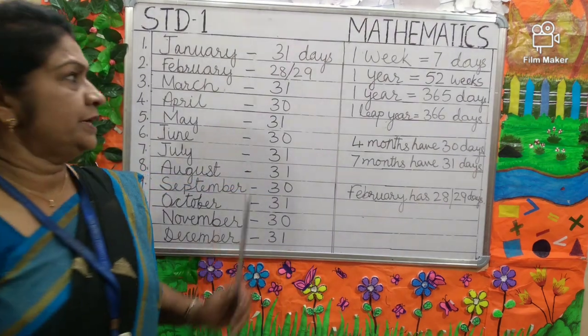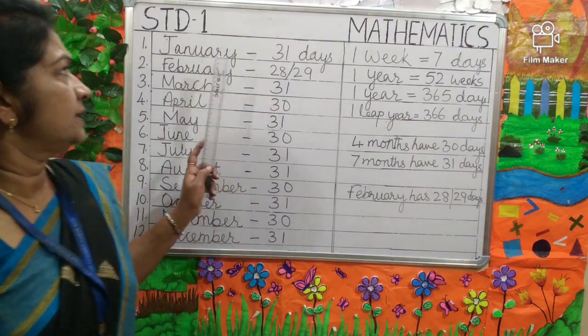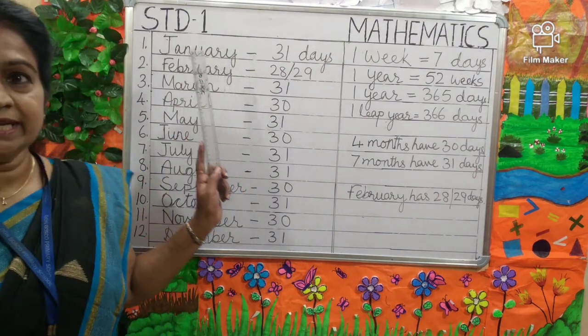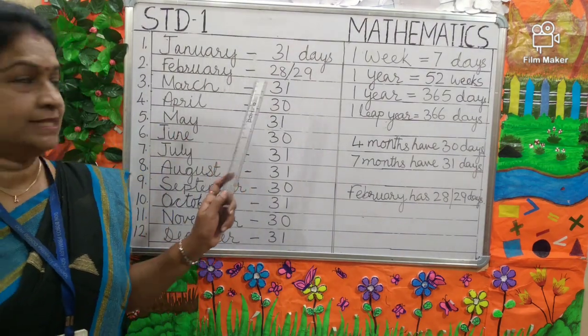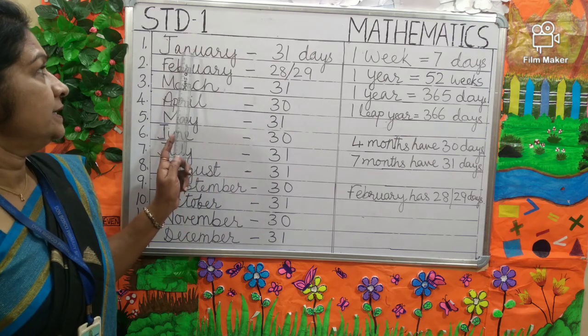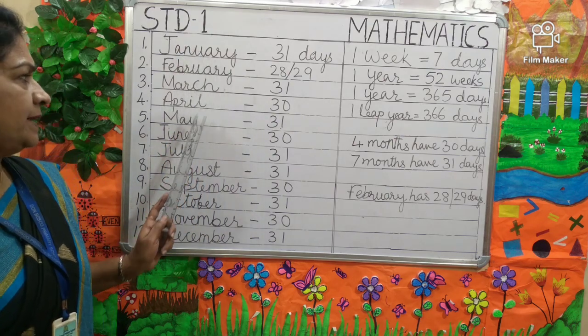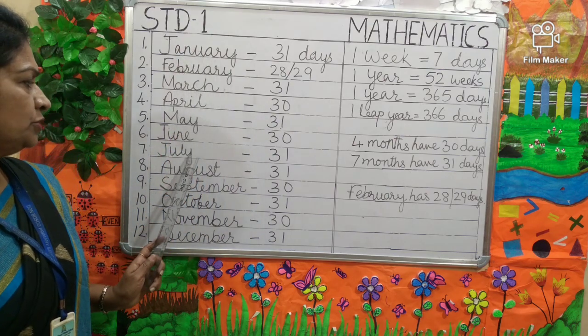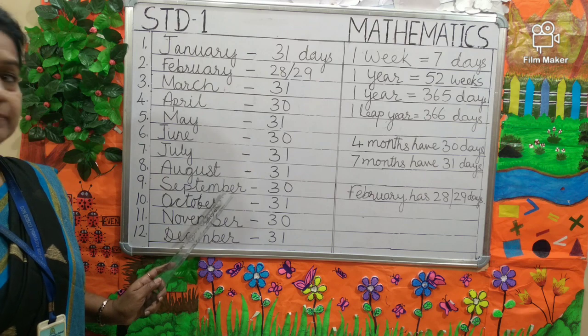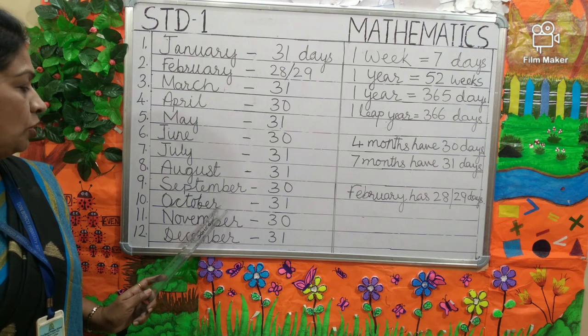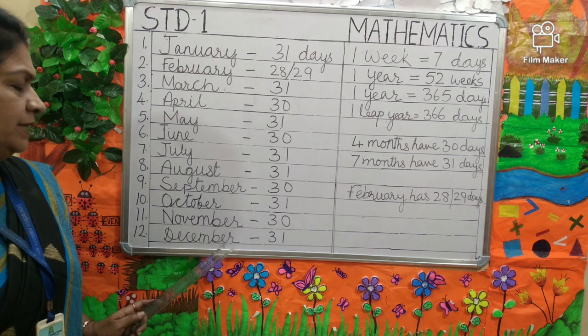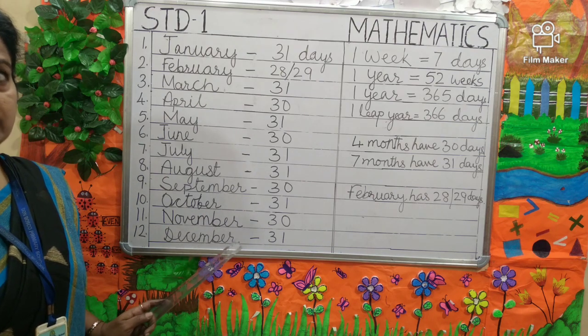Now look at the board and once again we can revise. The months are January, February, March, April, May, June, July, August, September, October, November, December.